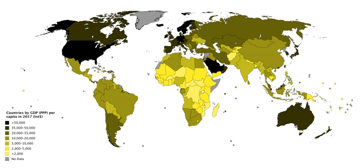Total GDP can also be broken down into the contribution of each industry or sector of the economy. The ratio of GDP to the total population of the region is the per capita GDP, also called the mean standard of living. GDP is considered the "world's most powerful statistical indicator of national development and progress."